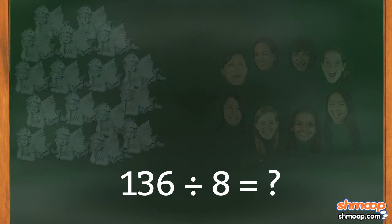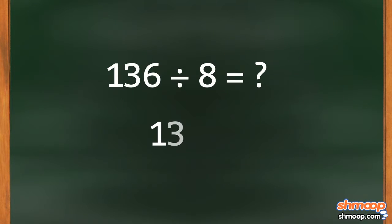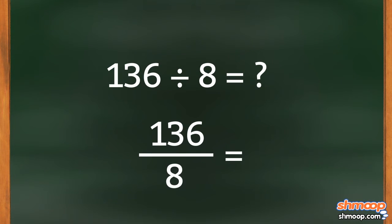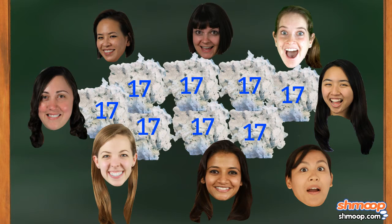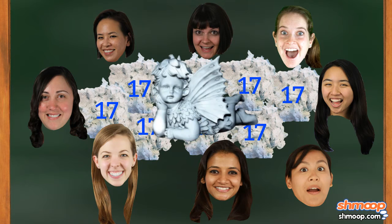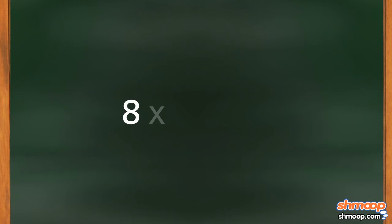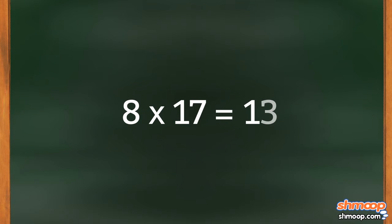Now it's just a matter of doing the math. 136 divided by eight comes out neatly and evenly to 17. So each bridesmaid, plus our bride, needs to make 17 cupids. We can double-check our answer by multiplying eight by 17, and that's 136, and that's it.